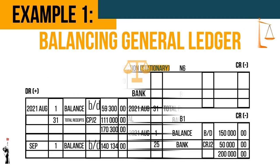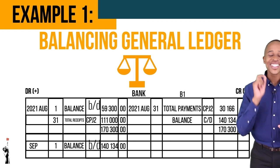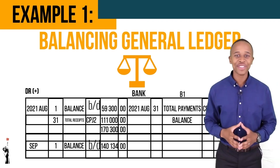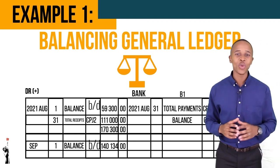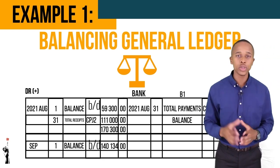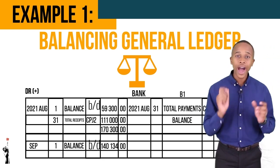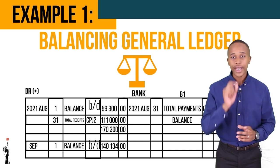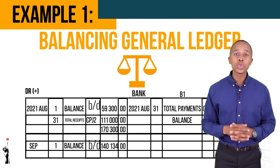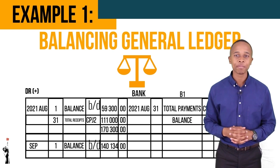Grade Nines, this is the end of Lesson 5. We looked at Lesson 5.1 and Lesson 5.2 and how to post the CRJ and the CPJ on the general ledger. Lastly, we looked at how to balance the general ledger. Next time we'll be looking at how to post on the trial balance. Thank you very much, have a pleasant day.